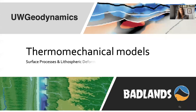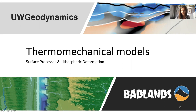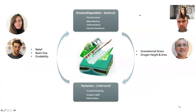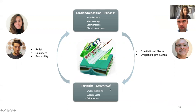The first coupled models we developed are the thermomechanical models, coupling surface processes with Badlands and lithospheric deformation with UW-Geodynamics. Romain already explained why it is really important to take these two scales into account. When you have erosion and deposition with the Badlands model, you have gravity stresses associated with that erosion and loading, which has feedback on tectonics. And the tectonics, of course, impact relief, erosion rates, and erodibility. These phenomena are linked.